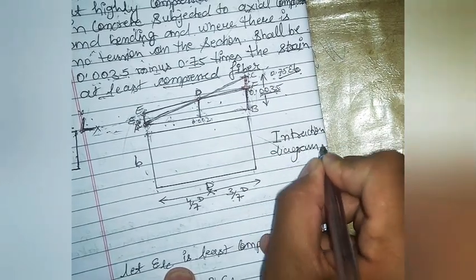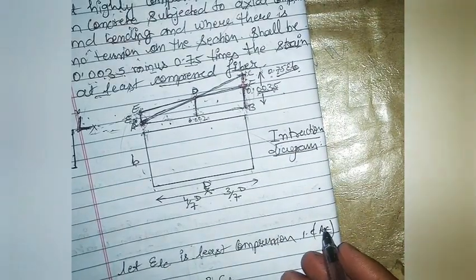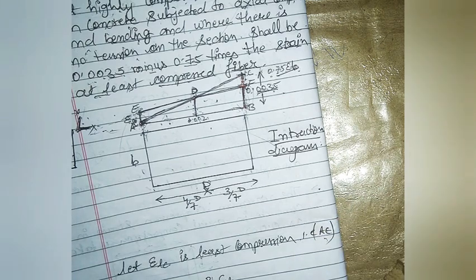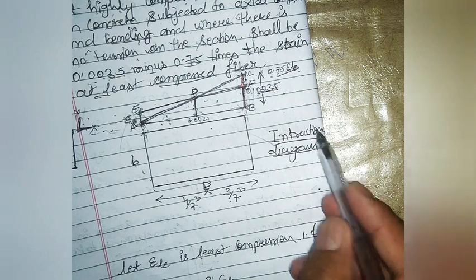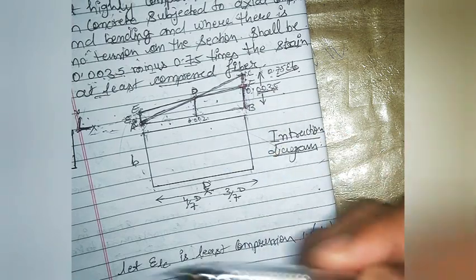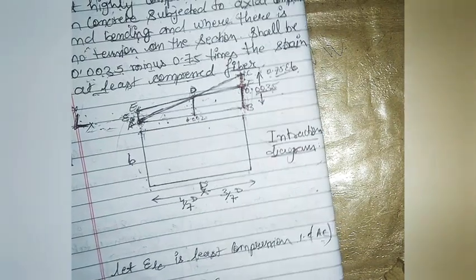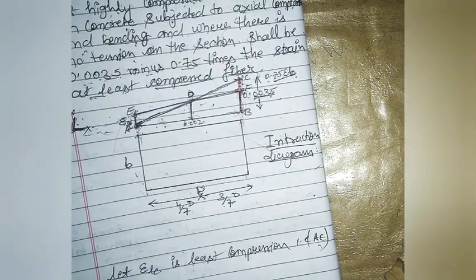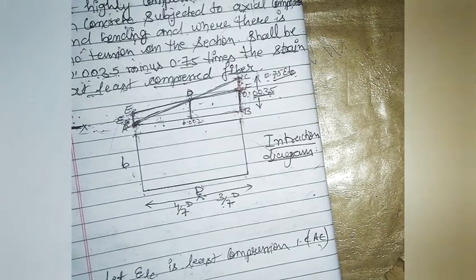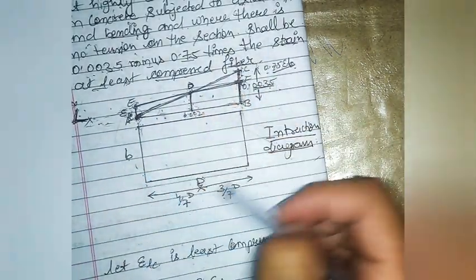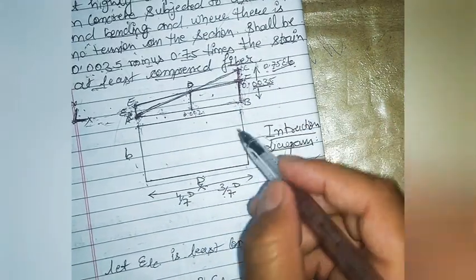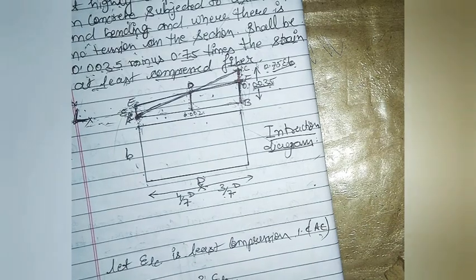The interaction diagram is very helpful in calculating the load capacity of the column. Based on this stress-strain diagram for uniaxial bending column design, we draw an interaction diagram from which we calculate the column's capacity. These interaction diagrams are given in SP:16, so we can directly use them without needing to redraw them each time.